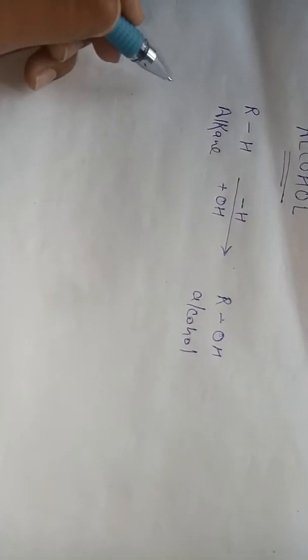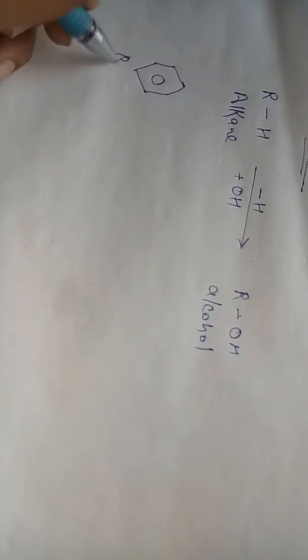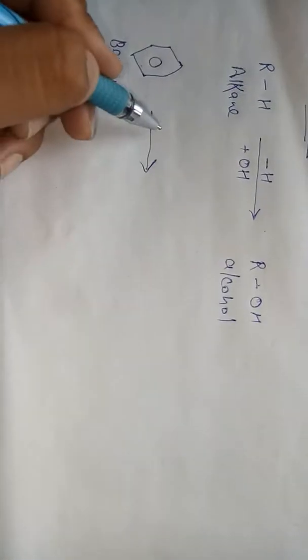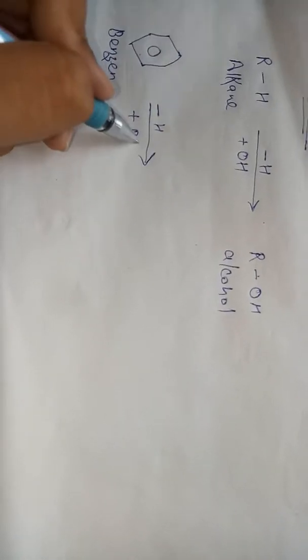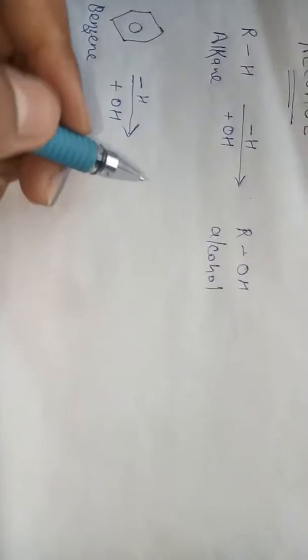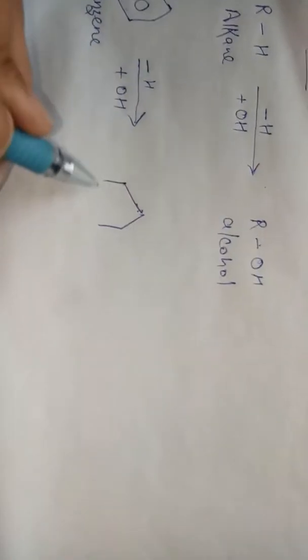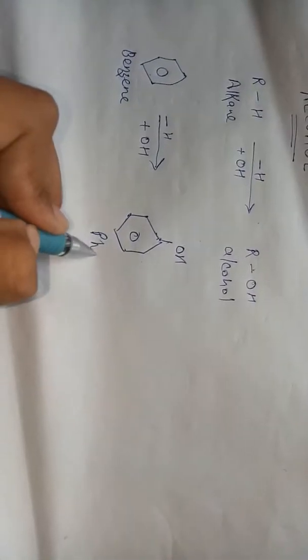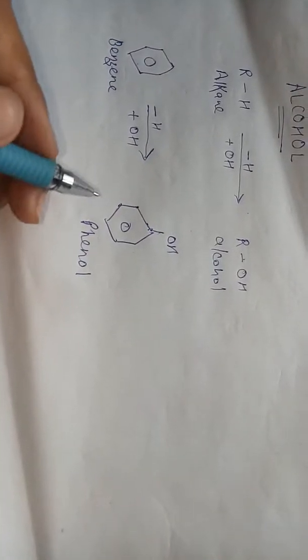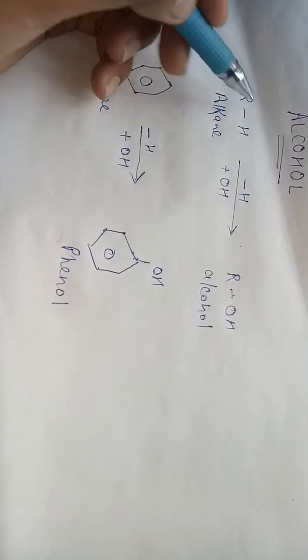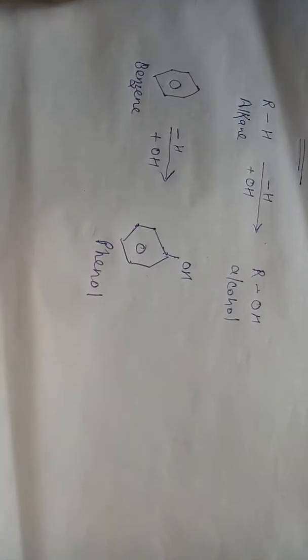Similarly, if we have a benzene compound, we do the same — remove a hydrogen and add OH. This gives us phenol. Alcohol has many uses in our day-to-day life.